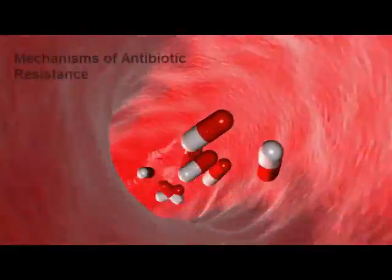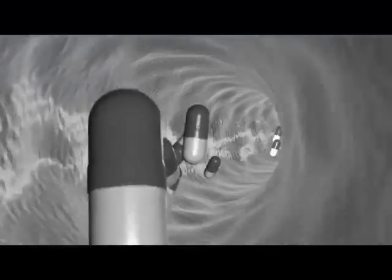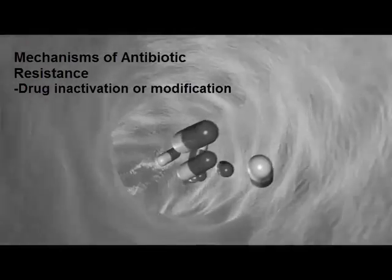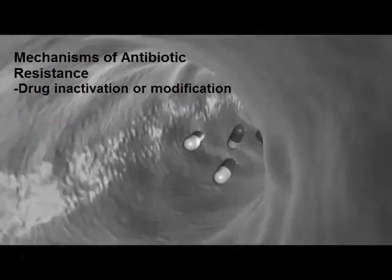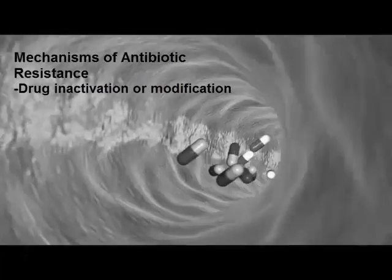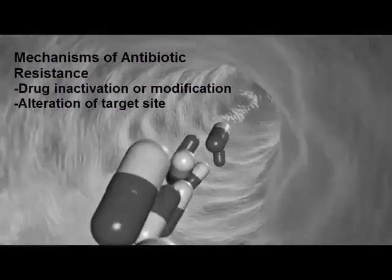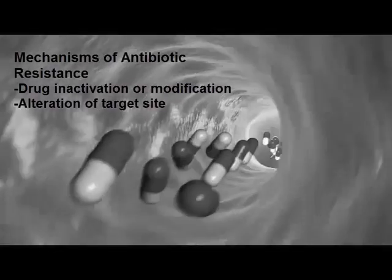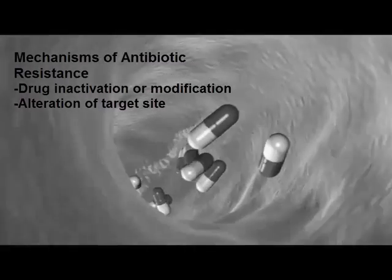There are four ways that bacteria can become resistant to antibiotics. The first is drug inactivation or modification, meaning that the bacteria produce an enzyme that is able to chemically destroy the antibiotic or render it inert. The second is alteration of the antibiotic's target site. For example, if a drug targets an enzyme, that enzyme could mutate in such a way that the antibiotic will no longer work but it will retain its function.